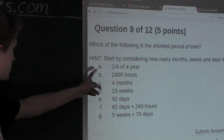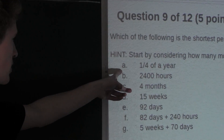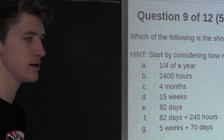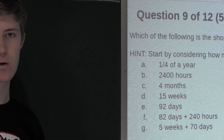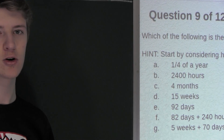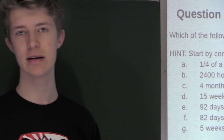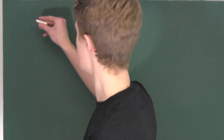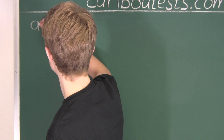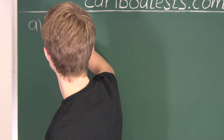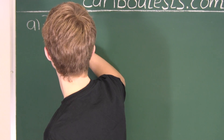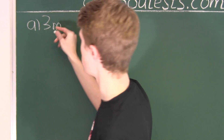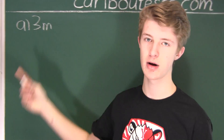Now let's look at option A: a quarter of a year. A year has 12 months, and a quarter of that is 3 months. We will write M for months.